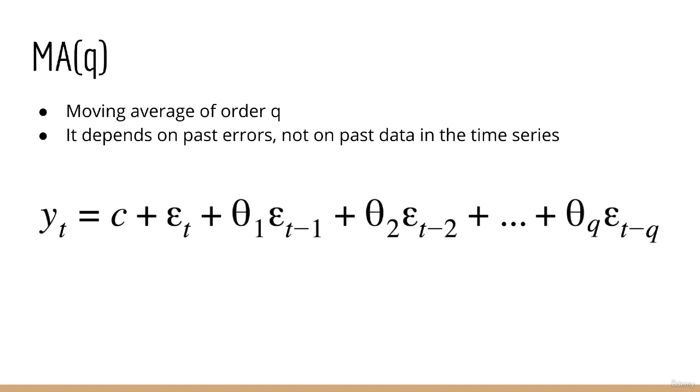Of course, in order to know these errors, we must have compared the previous predictions with the previous values of the time series. Note that our abbreviated form for a moving average model with order Q is MA(Q). This means that the output Y depends on Q past error terms in addition to the latest error term epsilon sub T.